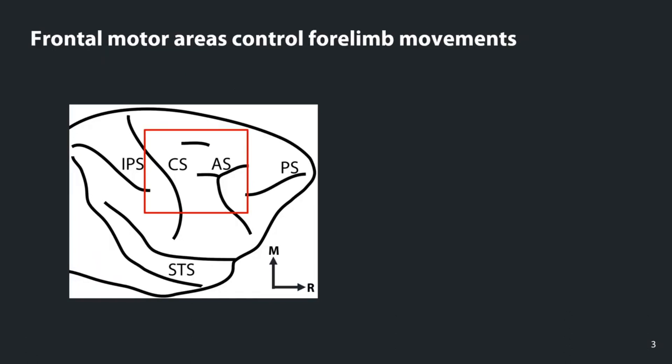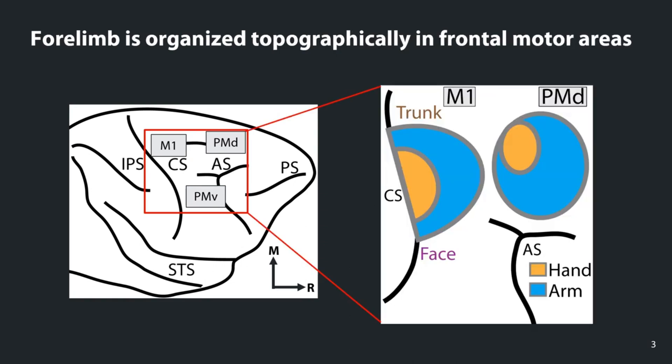Frontal motor areas are responsible for controlling forelimb movements, and if we look at the macaque brain here, some of those areas include M1, primary motor cortex, PMD, dorsal premotor cortex, and PMV, which is ventral premotor cortex as labeled here. Within these frontal motor areas, there is an organized topography such that different parts of the body are represented.